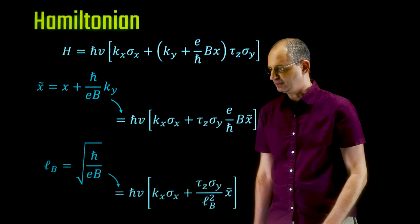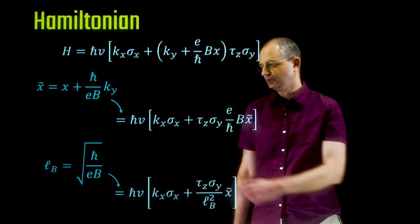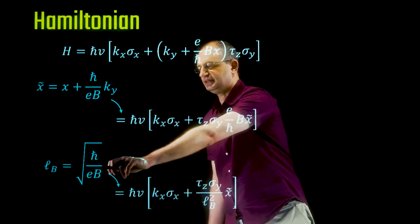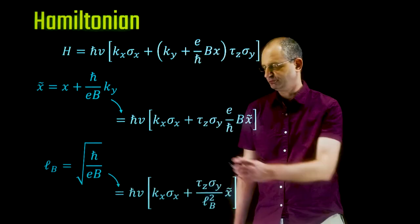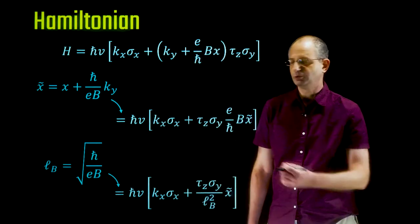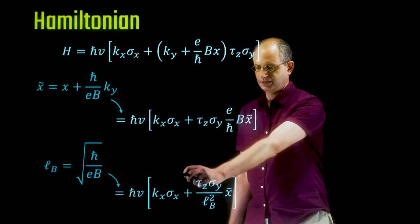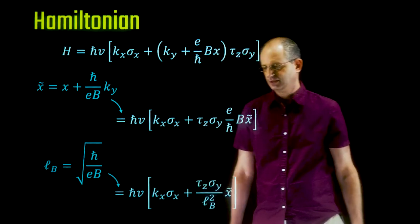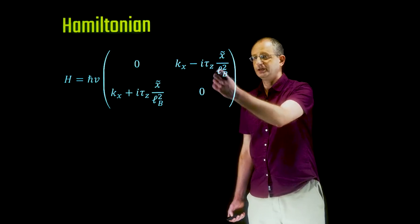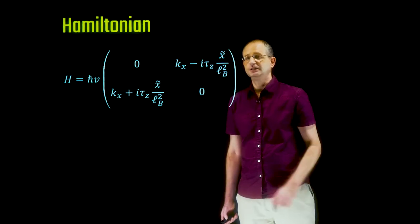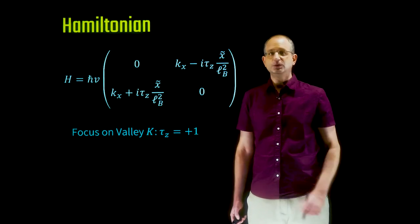Next we bring the Hamiltonian into dimensionless form by defining the magnetic length l_B = sqrt(ℏ/(eB)), assuming B is positive. After introducing the magnetic length, the Hamiltonian takes the form of a 2×2 matrix whose elements are operators depending on the two conjugate variables x̃ and k_x.